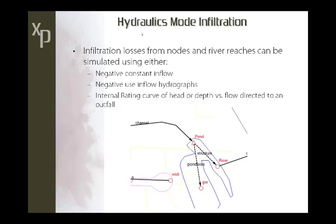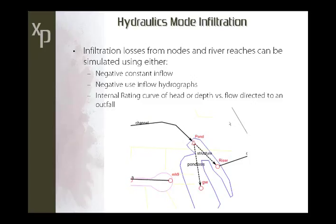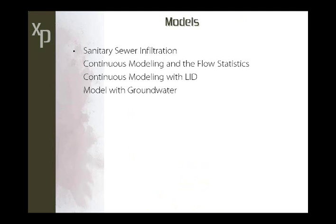To simulate infiltration or exfiltration losses from ponds in hydraulics mode, the best approach is to use an internal rating curve based on head or depth versus flow, directed to an outfall representing groundwater. In the model example, the pond has a discharge structure through one multi-link, and pond losses use a separate multi-link with an internal rating curve. The depth-versus-flow relationship was derived using Darcy's law — hydraulic conductivity of the soil multiplied by the pond or lake area at increasing depths. You can combine infiltration and evaporation losses from ponds this way.